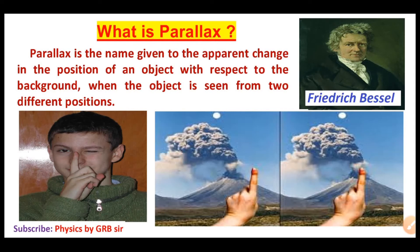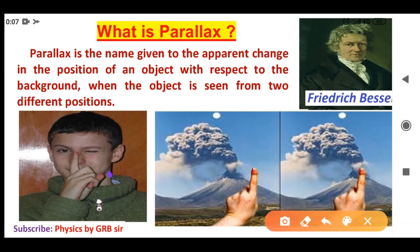You can do the same demonstration yourself. First, close your left eye and look with your right eye, then note the position. Next, close your right eye and look with your left eye. The position of the object will appear to change slightly with respect to the background. This apparent change in position is the Parallax.